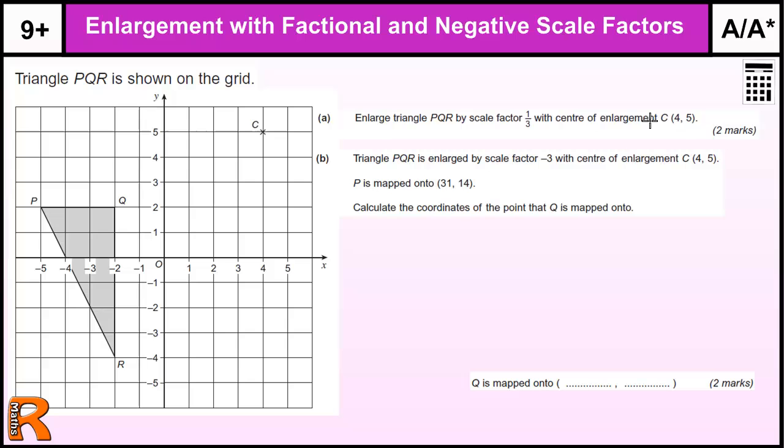Now with these sort of questions, you've got a center of enlargement, you've got a triangle PQR. You're going to get a method mark if you draw on the rays of construction that show where the enlargement is going. So it's coming from C and it's going to these points.